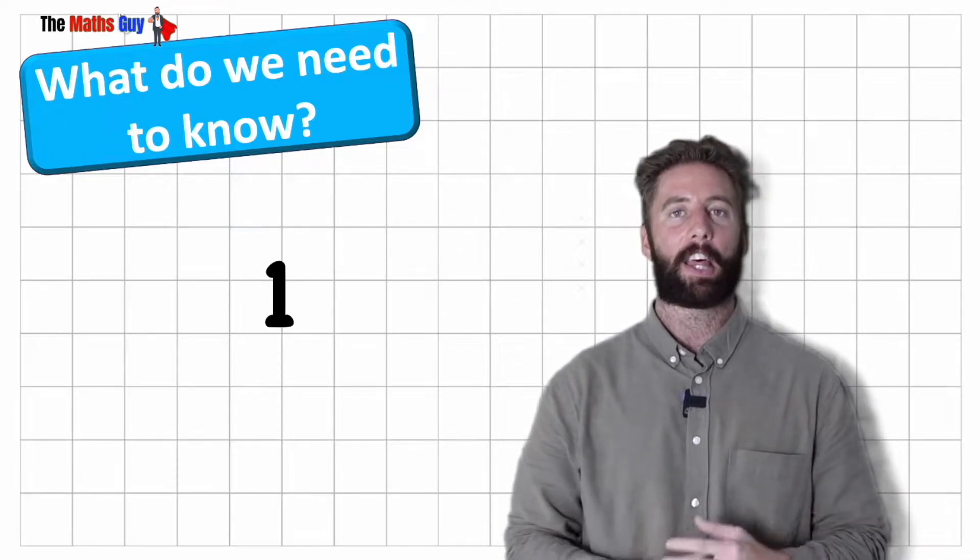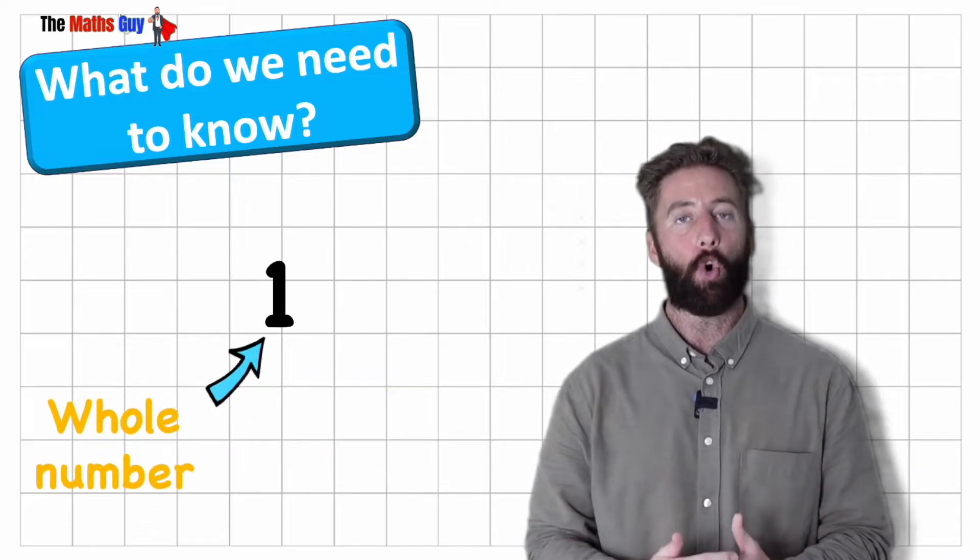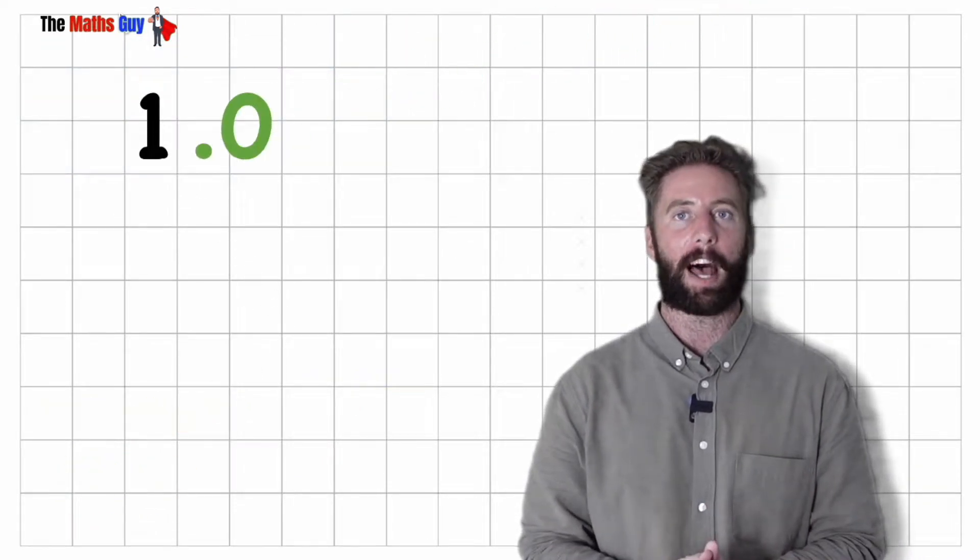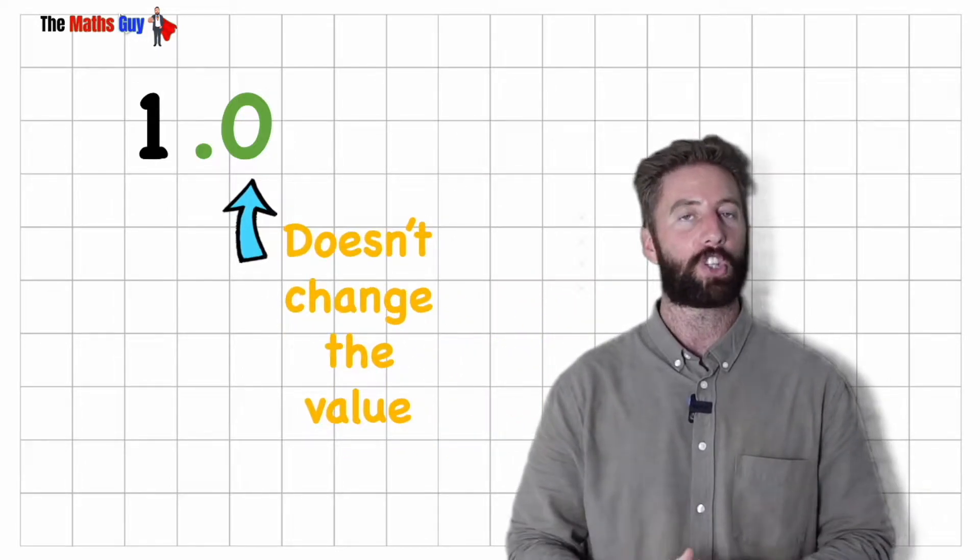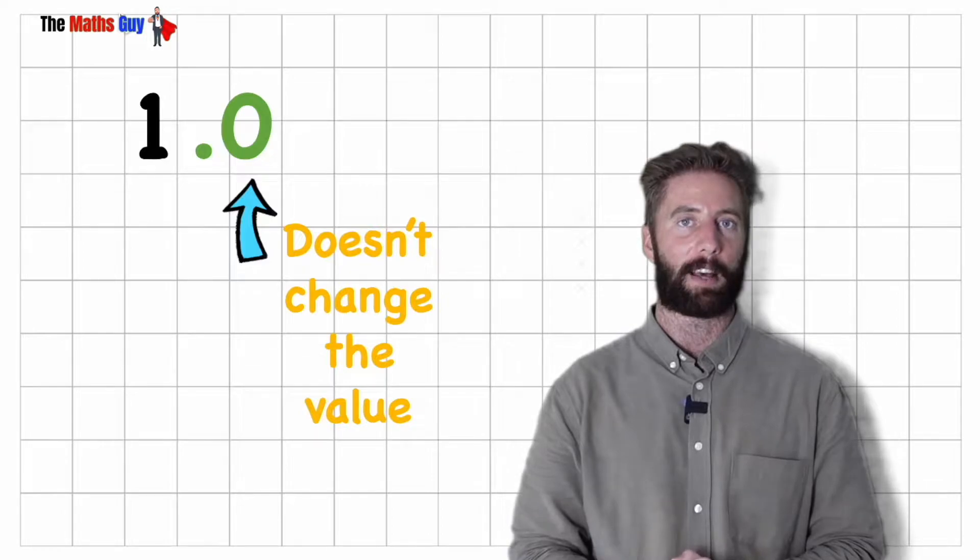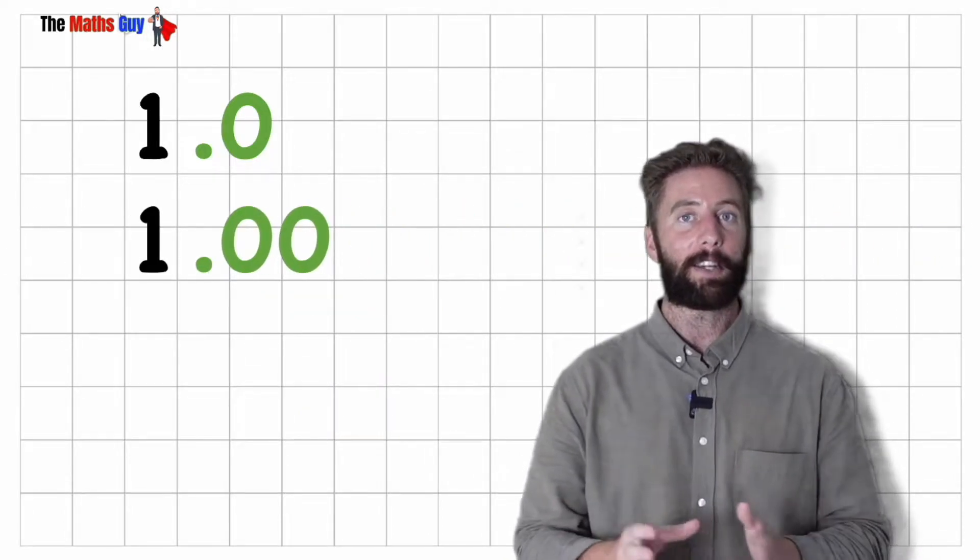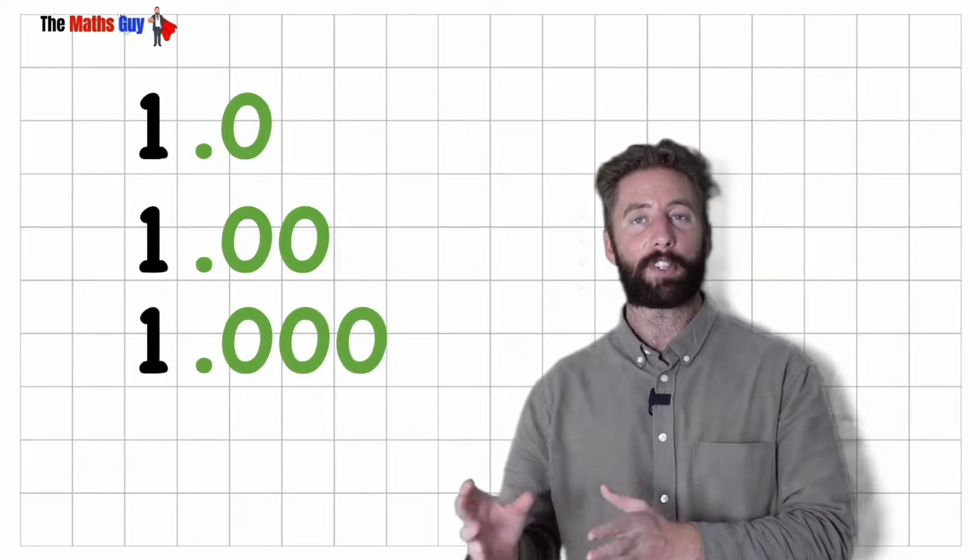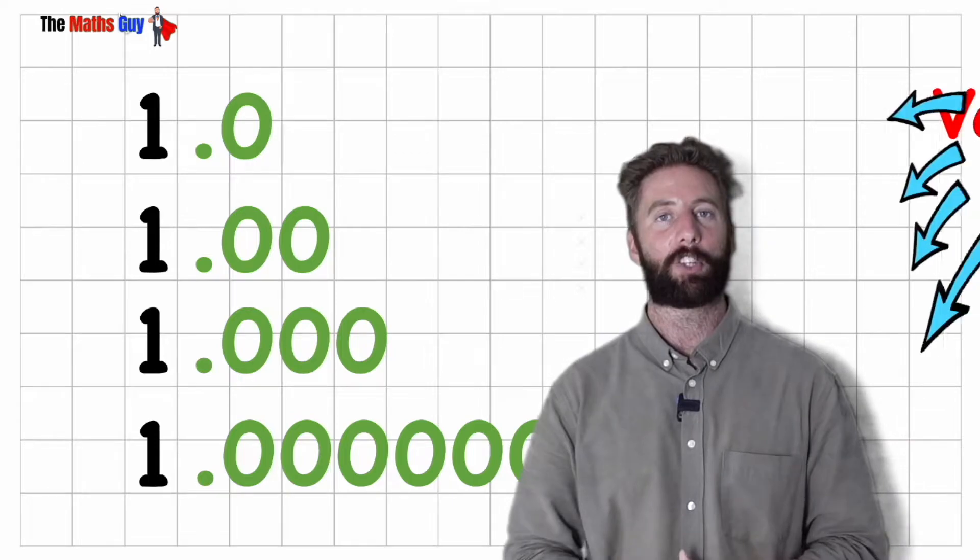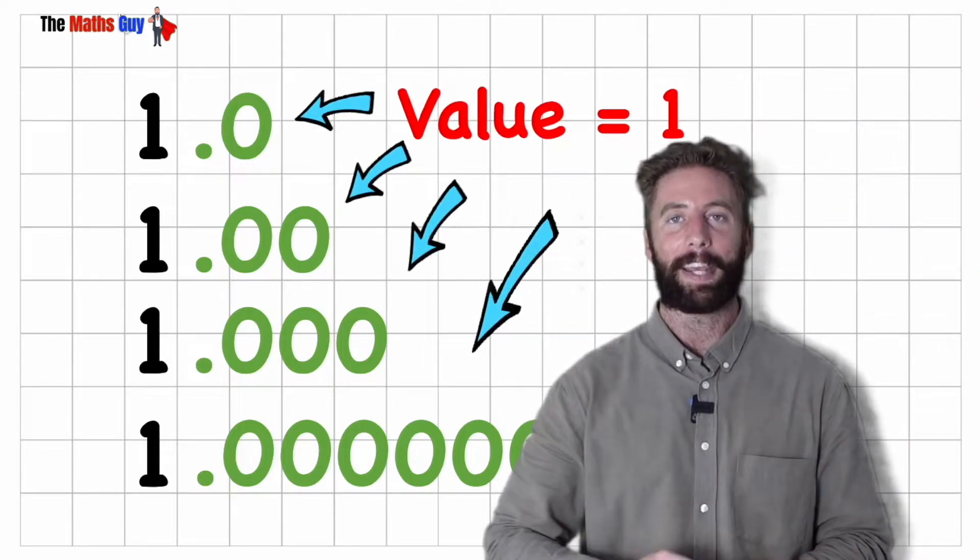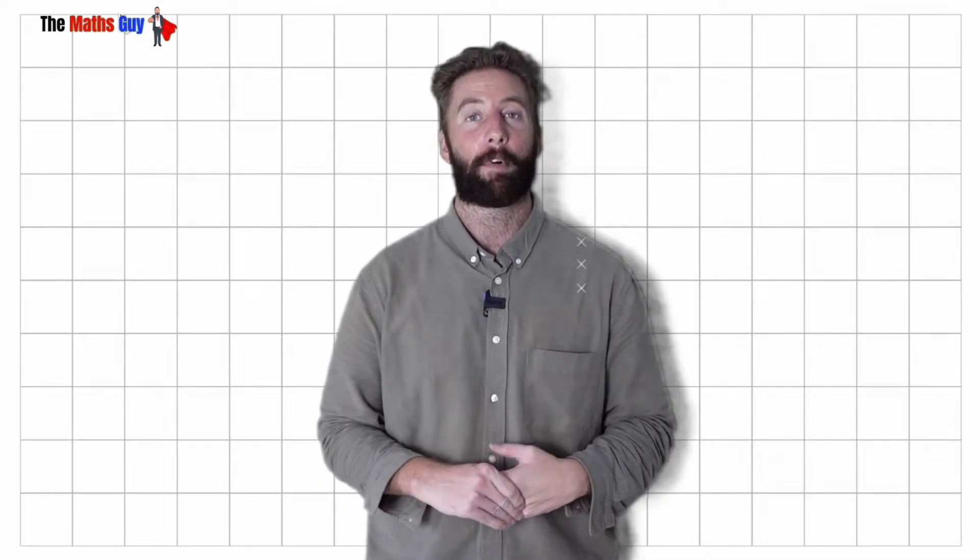We need to understand that the number 1 or any number can have a whole number or we could put a decimal after and have an unlimited amount of zeros after our decimal that will not change the value of this number. So we could have the number 1 or 1.0, 1.00, 1.000 or 1.0000 forever and it's not going to change the value of that 1. It is still just a 1. So that's something we need to just bear in mind before we begin.